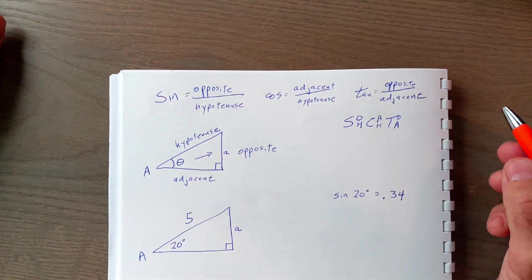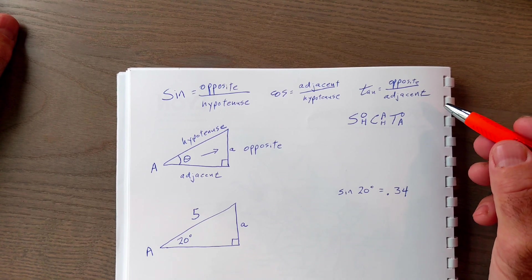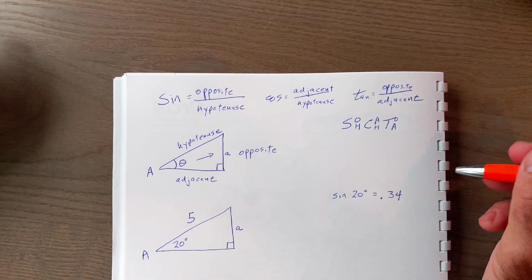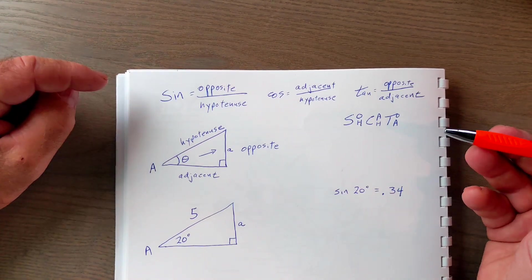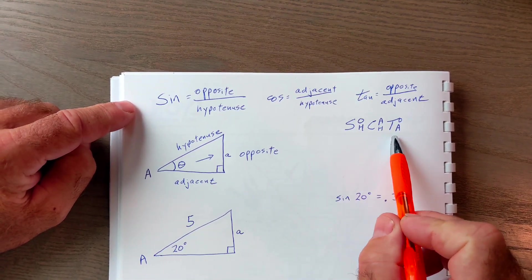Hey fellow problem solvers, a follow-up video on sine, cosine, and tangent. Those are three trig functions, remembering that they are only ratios or fractions. So the mnemonic device I use to remember is this right here, SOHCAHTOA.